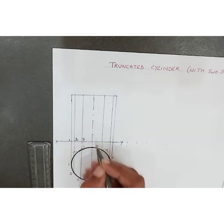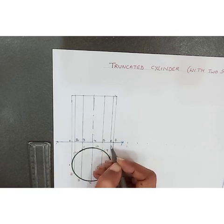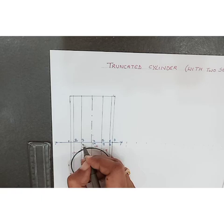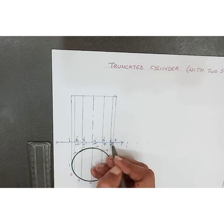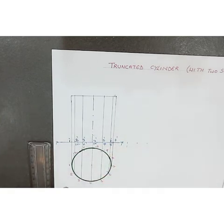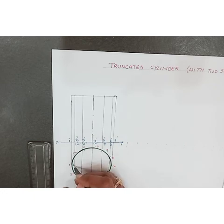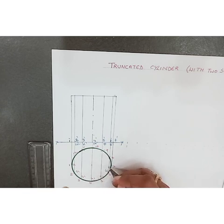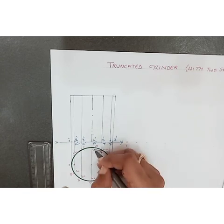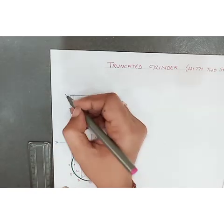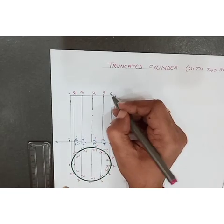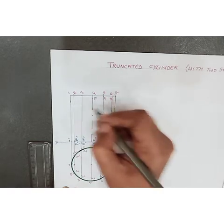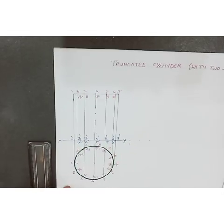Number the generators: 1, 2, 3, 4, 5, 6, 7, 8, 9, 10, 11, 12 with primes for the front view. We also need to give numbers for the top base as well as the bottom base — for example, 1, 2, 3, 4, 5, 6, 7, 8, 9, 10, 11, 12 with their corresponding labels.